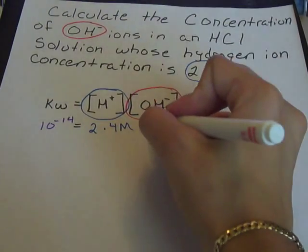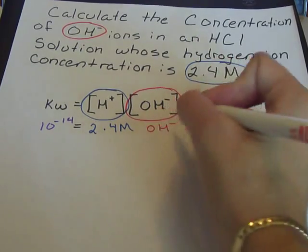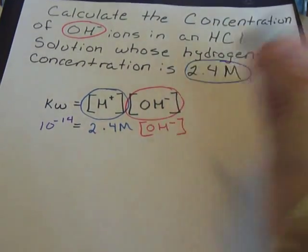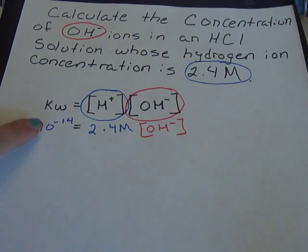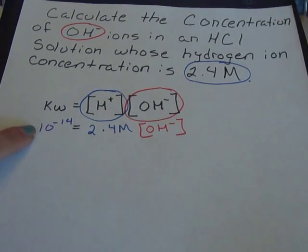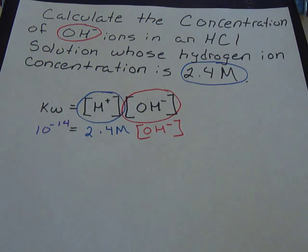Then we're left with the OH that we need to find, the concentration. In order to solve this, we're going to divide 10 to the negative 14 divided by 2.4, and then we will obtain our concentration for the OH ion.